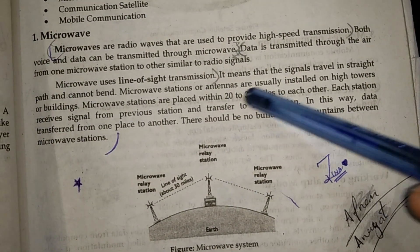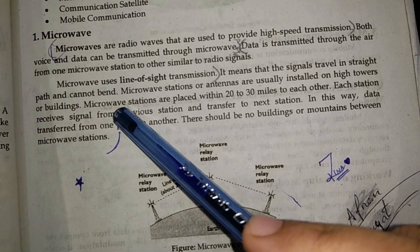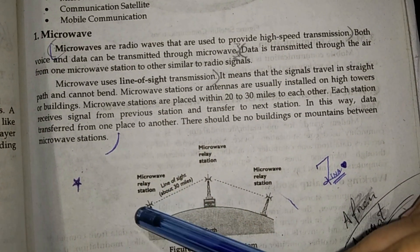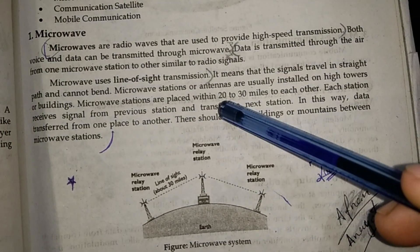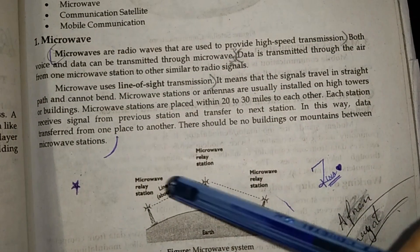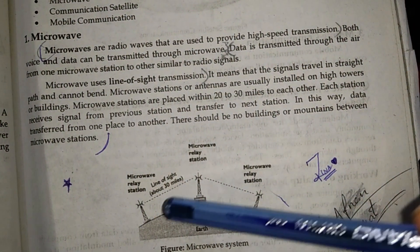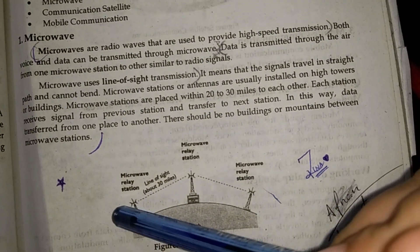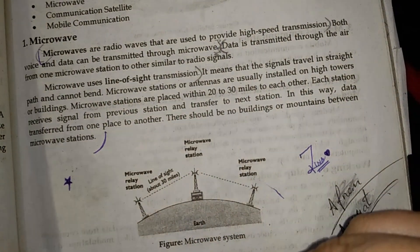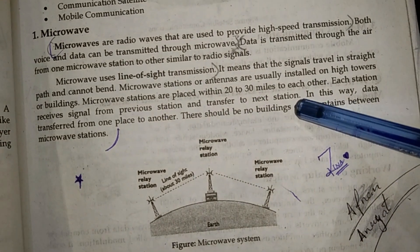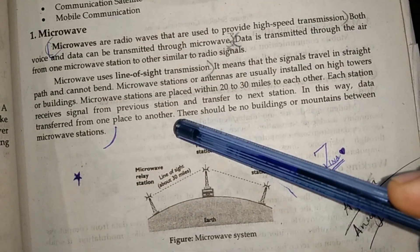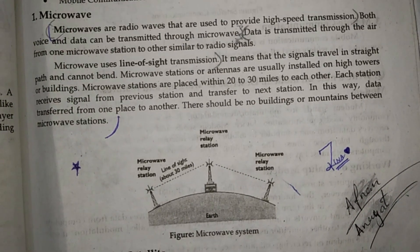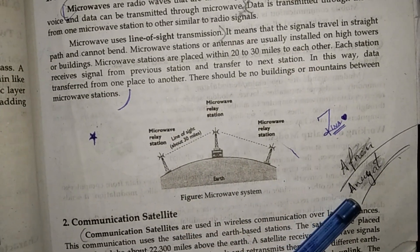Microwave station antennas are usually installed on high towers or buildings. Microwave stations are placed within 20 to 30 miles of each other. Each station receives a signal from the previous station and transfers it to the next, so data is transferred from one place to another.